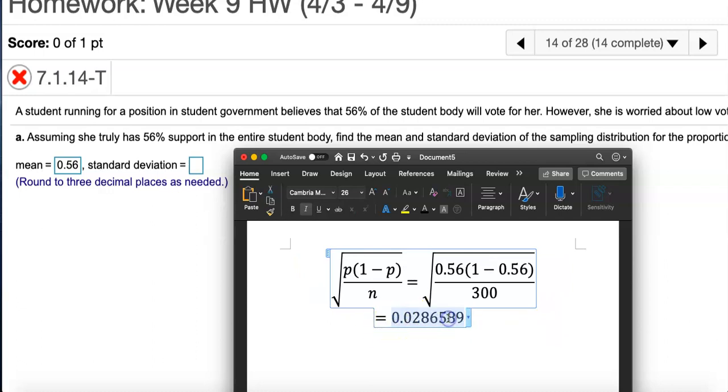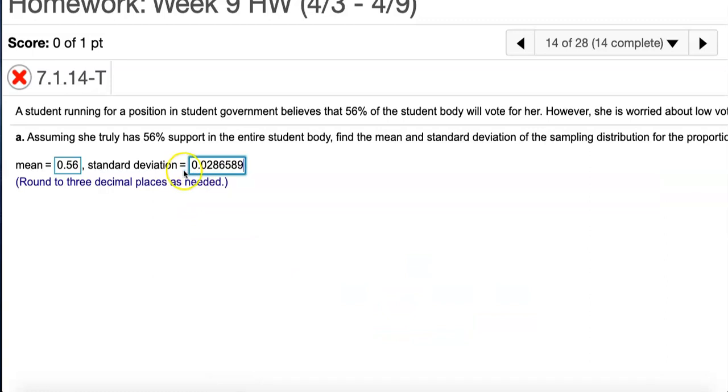I'm going to type what I have here: 0.0286589. Now I typed all of it because I don't know how they want you to round it. I'm going to copy this here and read the rounding direction: round to three decimal places, so I just need one, two, three numbers after that.